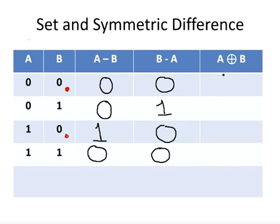Now, as I said before, we can consider A circle-plus B, or the symmetric difference of A and B, as the union of the two set differences. So we can get the union of these two columns here. So 0 and 0, the union of that is 0.